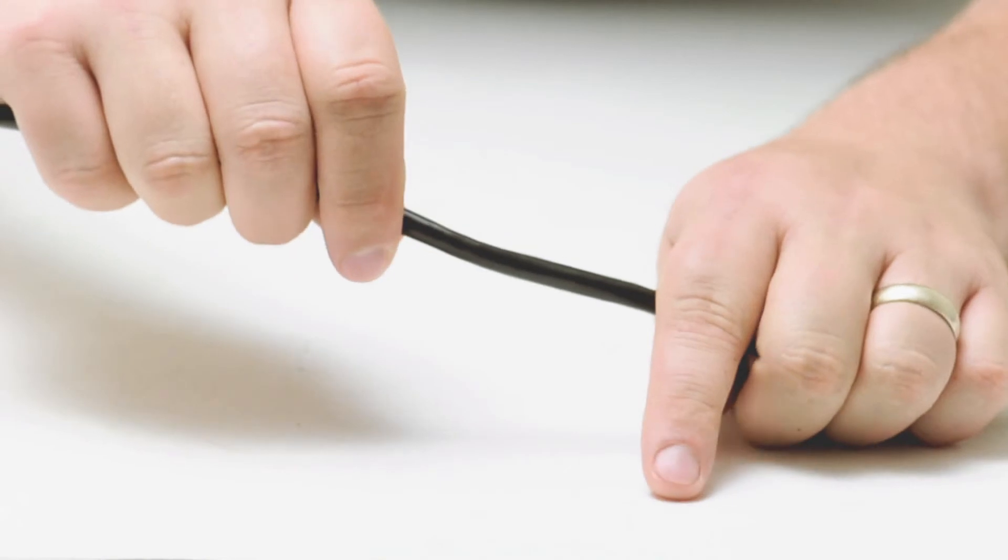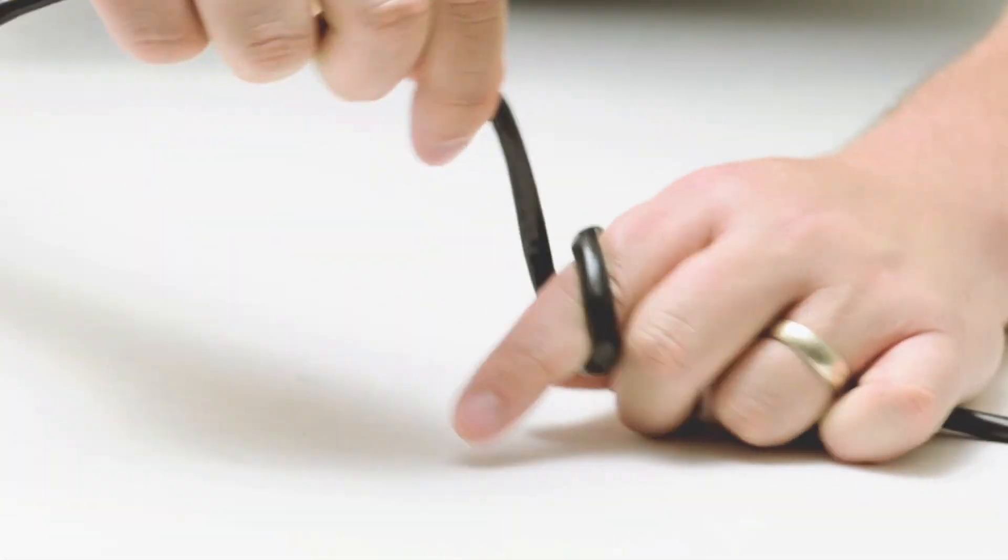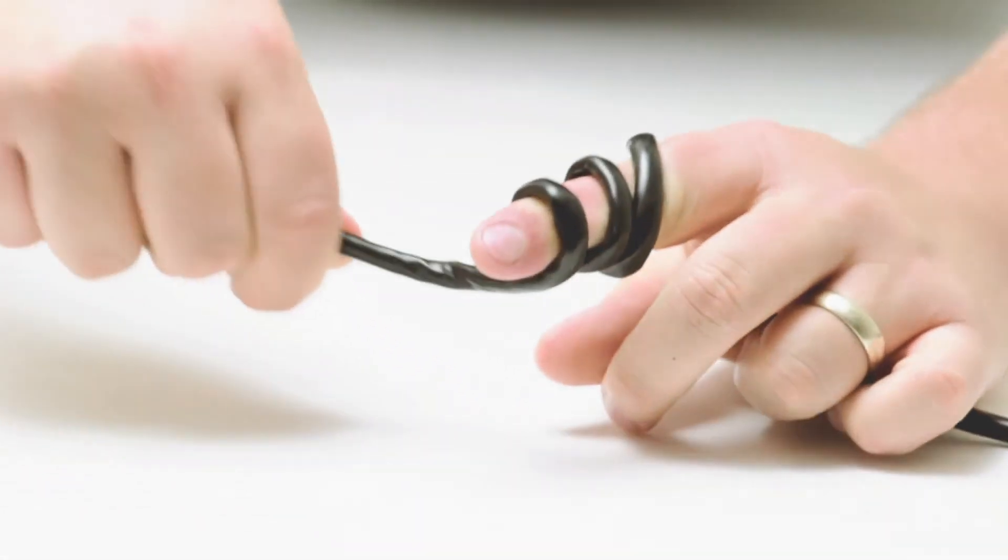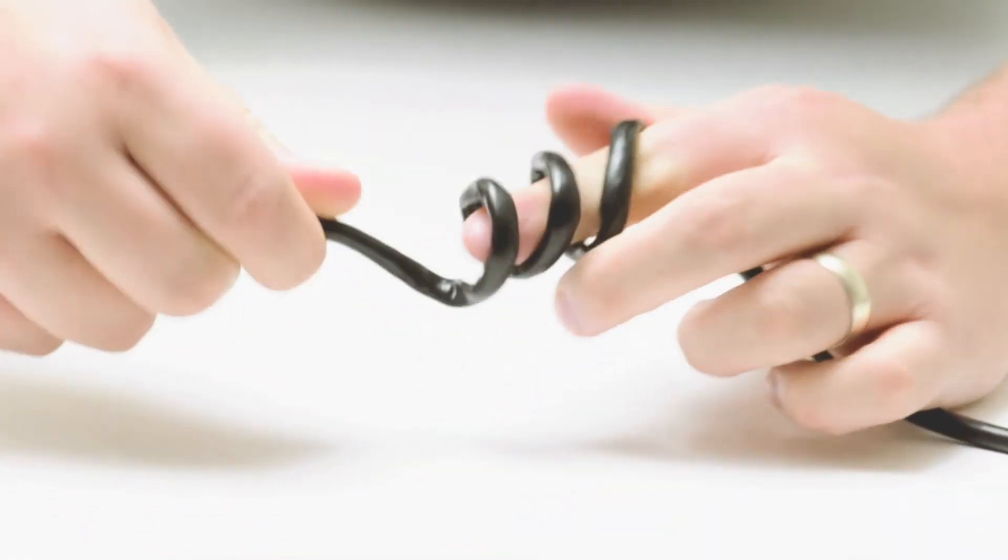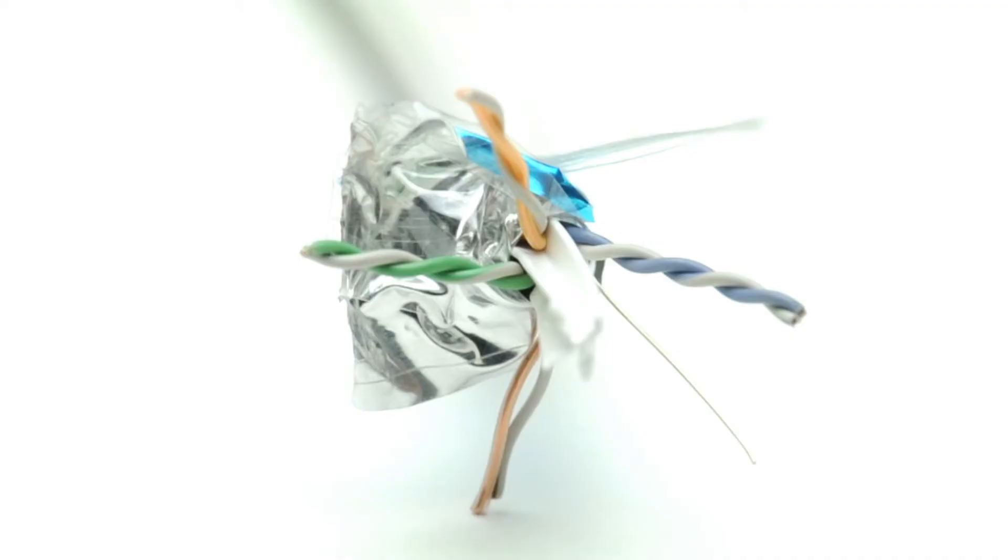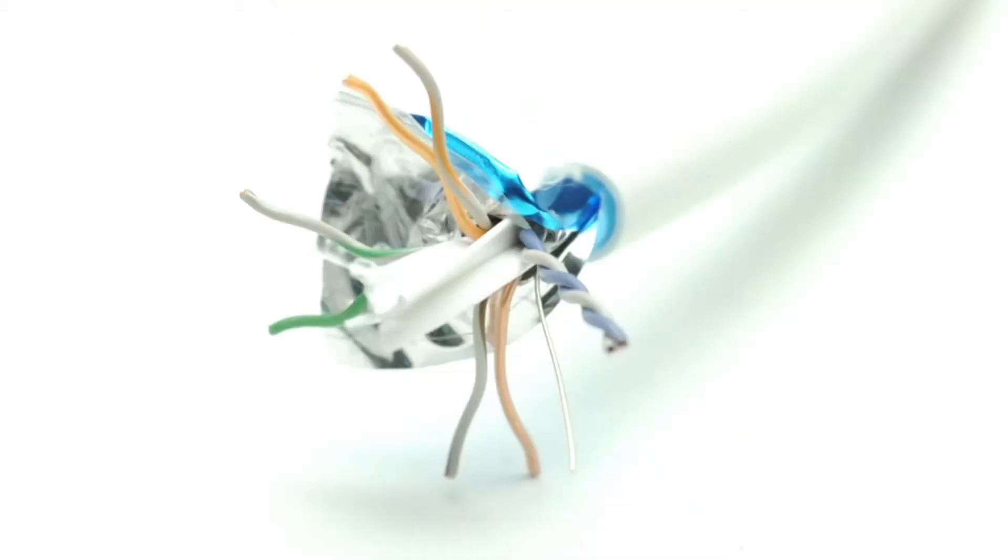Plenum solid shielded CAT6 features a flexible, fire-retardant PVC plenum rated jacket. Inside the shielding of the cable are four pairs of color-coded wire wrapped around a plastic spline. The color code helps you terminate the cable in proper order.